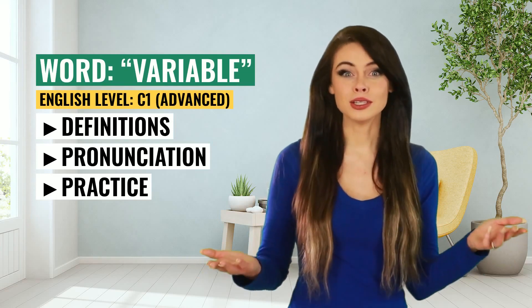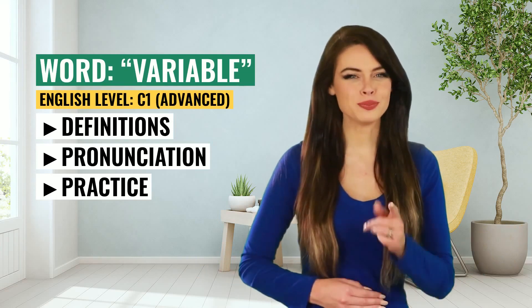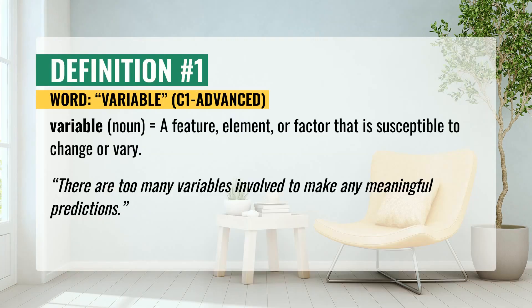Hi! Ready to get a little smarter? Do you know what this means? The first definition of variable: a feature, element, or factor that is susceptible to change or vary. For example, there are too many variables involved to make any meaningful predictions.